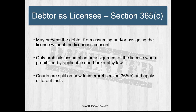Turning to situations where the debtor is the licensee — this is governed by bankruptcy code Section 365(c). Where the debtor has licensed IP from another party, intellectual property law and Section 365(c) may prevent the debtor from assuming and/or assigning the license without the licensor's consent. Section 365(c) only precludes assumption or assignment of the license where prohibited by applicable non-bankruptcy law — in this case federal intellectual property law — and where there's no consent to assignment in the license agreement itself. If the license agreement expressly authorizes assignment in advance, there's no issue. Accordingly, it's important that close attention be given to drafting provisions in license agreements that provide or decline to provide consent to assignment.